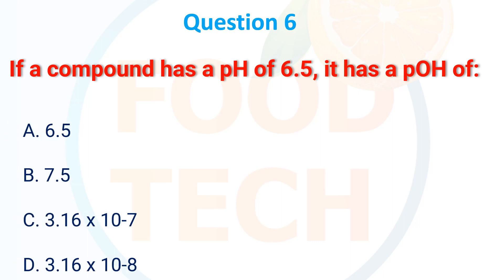If a compound has pH 6.5, it has a pOH of: A. 6.5, B. 7.5, C. 3.16 × 10⁻⁷, D. 3.16 × 10⁻⁸. The correct answer is C: 3.16 × 10⁻⁷.